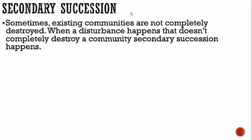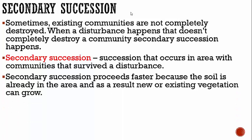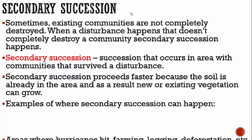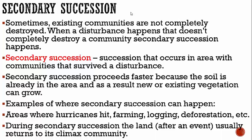Then we have secondary succession. Sometimes existing communities are not completely destroyed. When a disturbance happens that doesn't completely destroy a community, secondary succession occurs. Secondary succession is a type of succession that occurs in an area with communities that survived a disturbance — there's still some soil and some life there. Secondary succession proceeds faster because the soil is already in the area, and as a result, new or existing vegetation can grow. Examples include areas where hurricanes hit, farming, logging, and deforestation. During secondary succession, the land usually returns to what is called its climax community.